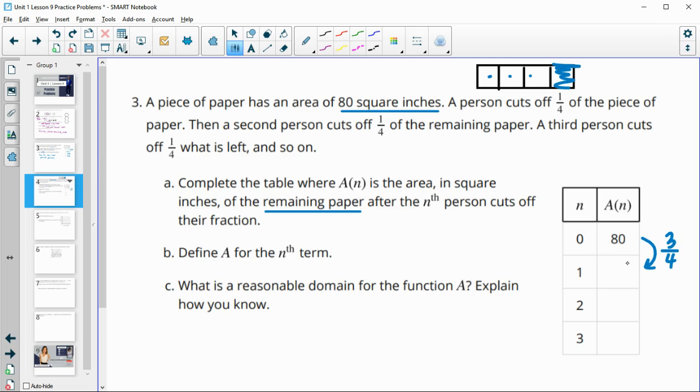So three-fourths of 80 is 60, because a fourth of 80 is 20, so we're going to subtract that off. You can just do three-fourths to get directly there. So then three-fourths of 60, the remaining paper, is going to be 45, and then three-fourths of 45 is 33.75 square inches remaining.